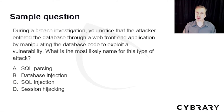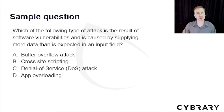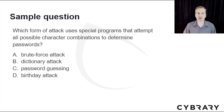Let's practice with some sample quiz questions. Question 1: During a breach investigation, you notice the attacker entered the database through a web front-end application by manipulating database code to exploit a vulnerability. What is the most likely name for this attack? The answer is C, SQL injection — a form of injection attack against back-end databases. Question 2: Which type of attack is caused by supplying more data than expected in an input field? The answer is A, buffer overflow attack. Question 3: Which form of attack uses special programs that attempt all possible character combinations to determine passwords? The answer is A, brute force attack.